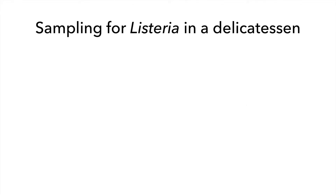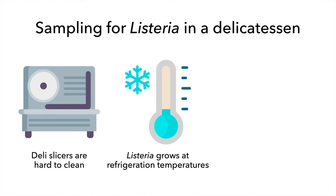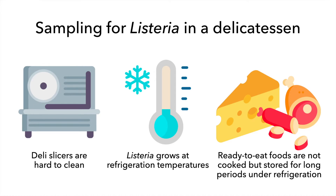Now, let's cover some examples specific to delicatessens. Delis are often at high risk for Listeria monocytogenes contamination. There are three main factors: deli slicers often contain hard-to-clean areas, specifically if they aren't taken apart properly, that allow Listeria monocytogenes to persist. Listeria monocytogenes can survive at refrigeration temperature. Ready-to-eat foods, like deli meats and cheeses, aren't cooked and are stored for long periods under refrigeration temperatures, presenting a high risk for growth of Listeria monocytogenes.